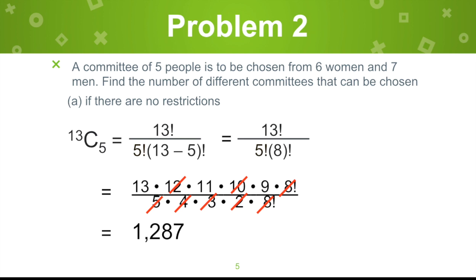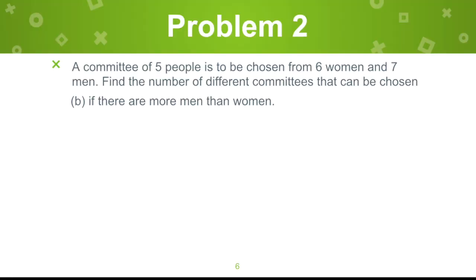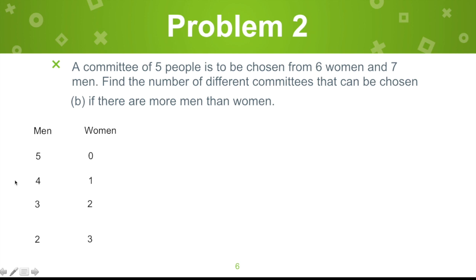In IGCSE additional math papers, usually the first part has no restriction at all. For letter B, if there are more men than women, we need a committee of 5 with more men than women. Let's list the possibilities: 4 men and 1 woman, 3 men and 2 women, 5 men and 0 women, and 2 men and 3 women. Even though there are 7 men, we can't go above 5 since the committee size is 5. Now let's satisfy the restriction — more men than women.